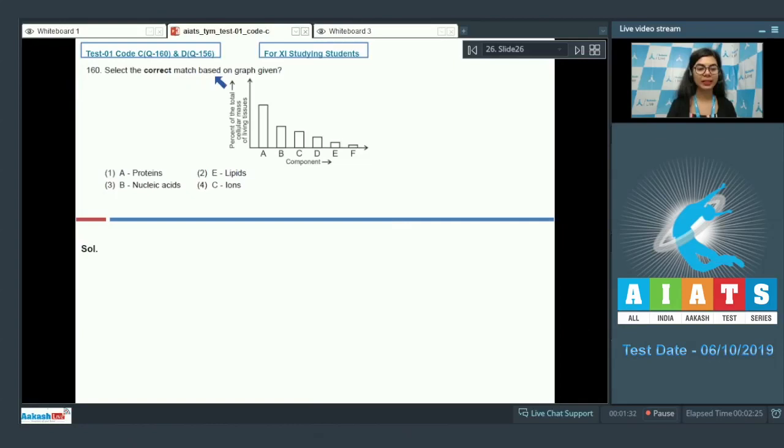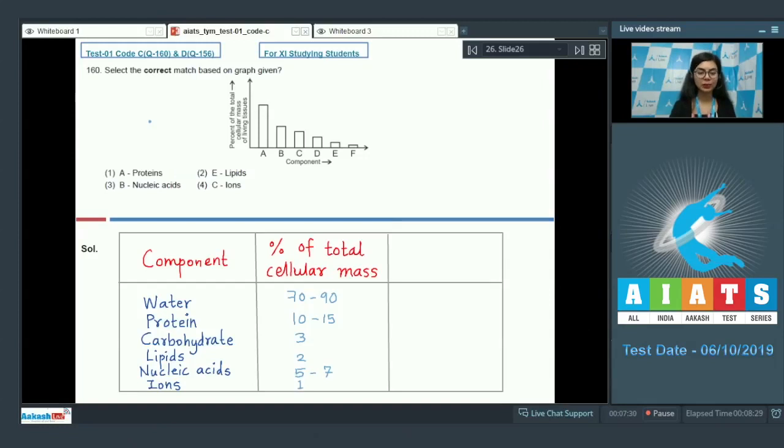Question 160. Select the correct match based on graph given. The given graph represents percentage of the total cellular mass of living tissues on y-axis and components on x-axis, and there are bars given in the descending order. In the NCERT, in the biomolecule chapter, a table is presented which reads components and percent of the total cellular mass. We see water is maximum 70 to 90% of the case. So that would represent in the graph this. That is A.